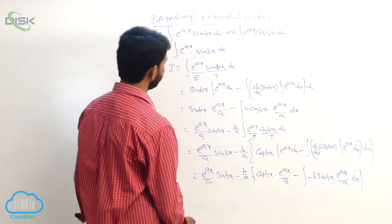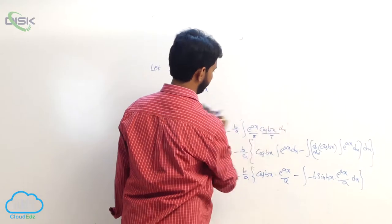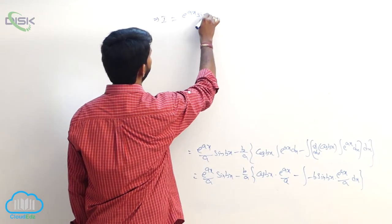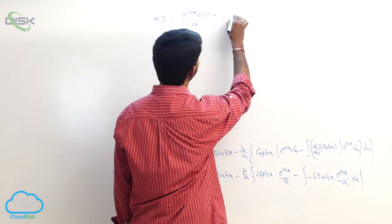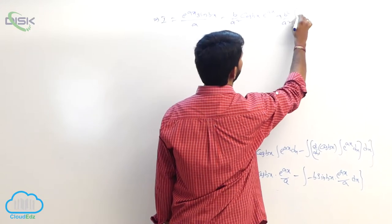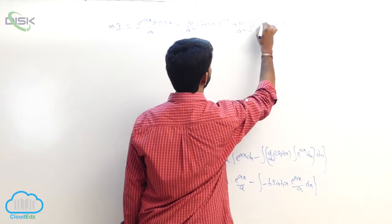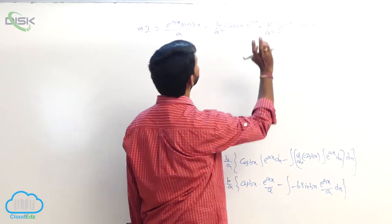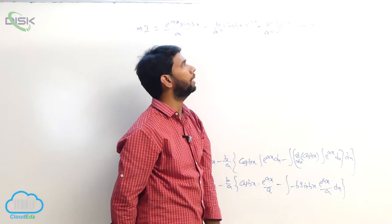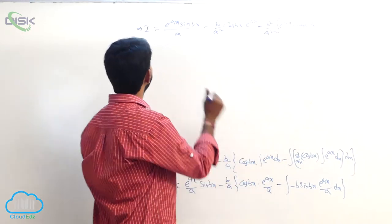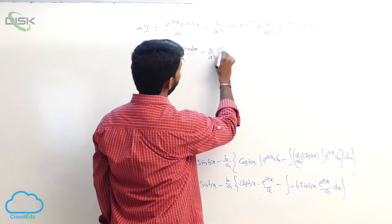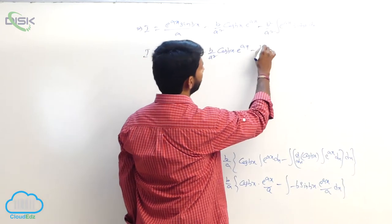Multiplying the minus b by a term: i is equal to e power ax into sin bx by a minus b by a square into cos bx into e power ax minus b square by a square into i. Taking i terms to the left side: i plus b square by a square into i equals e power ax into sin bx by a minus b by a square into cos bx into e power ax.